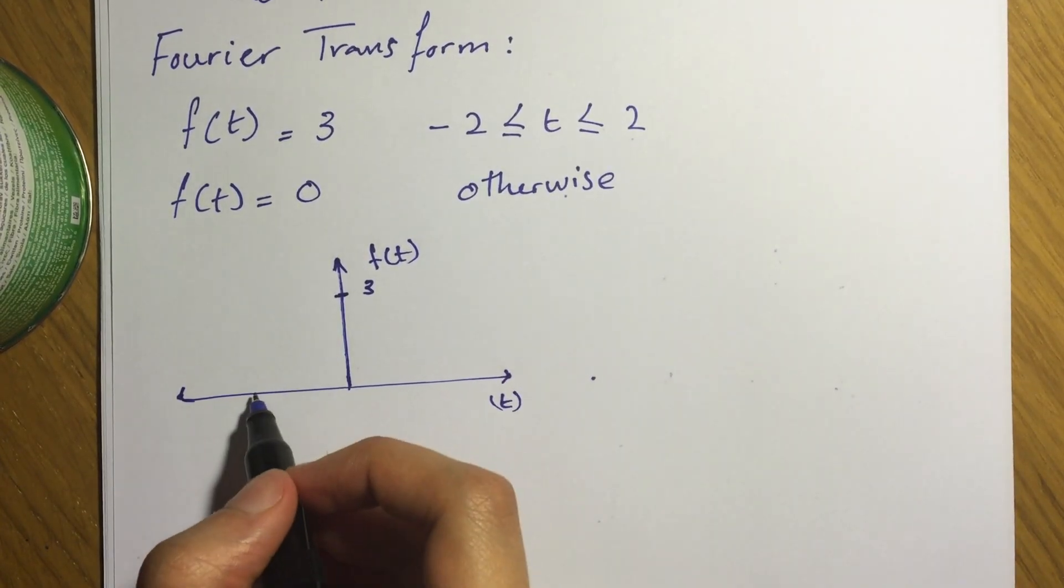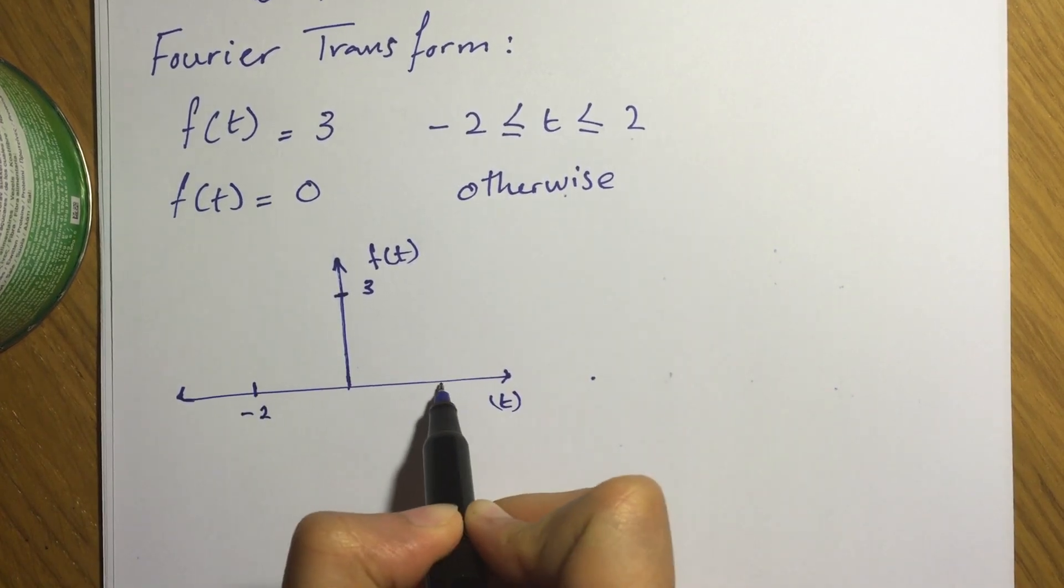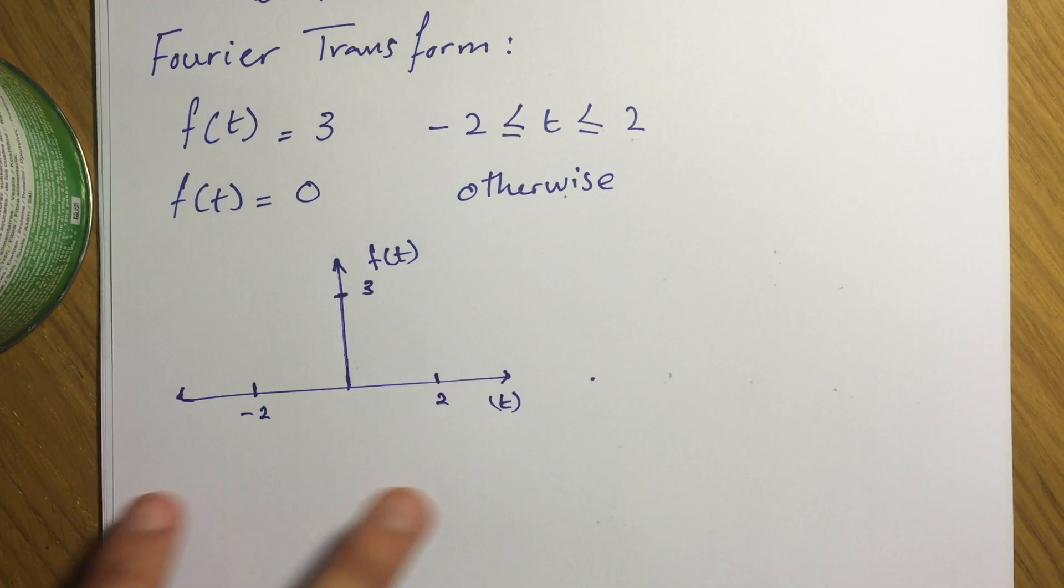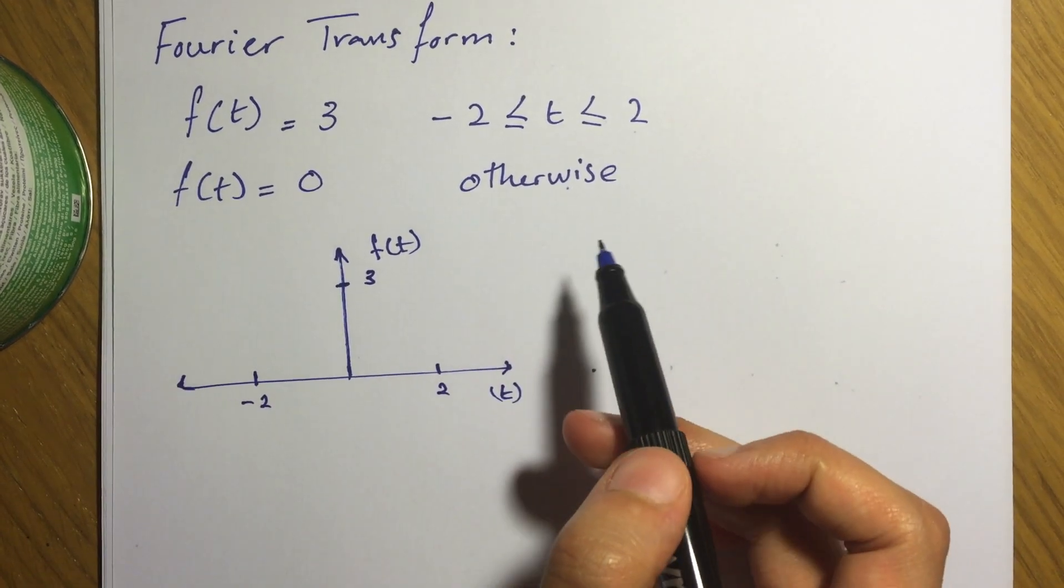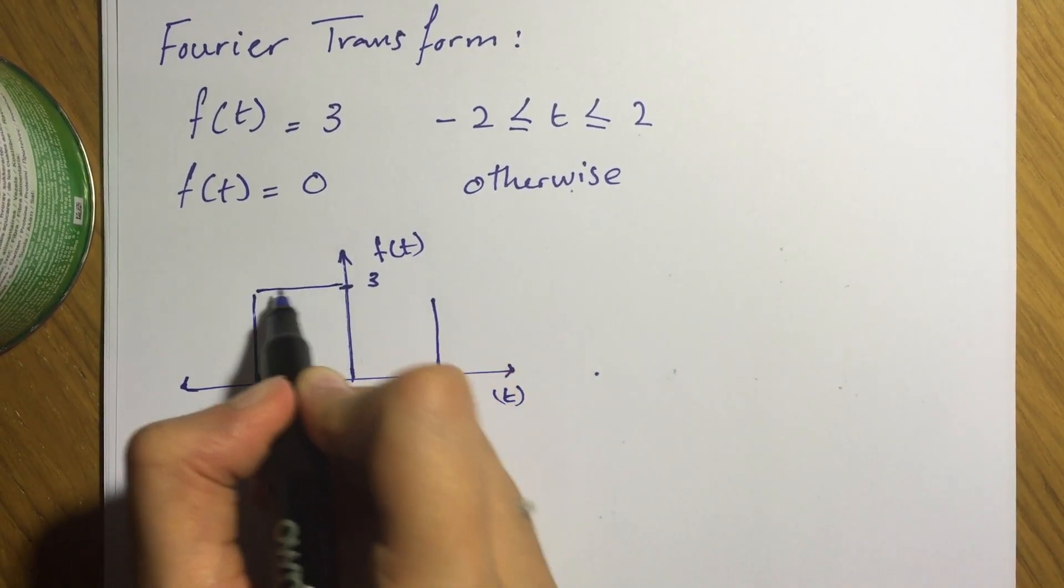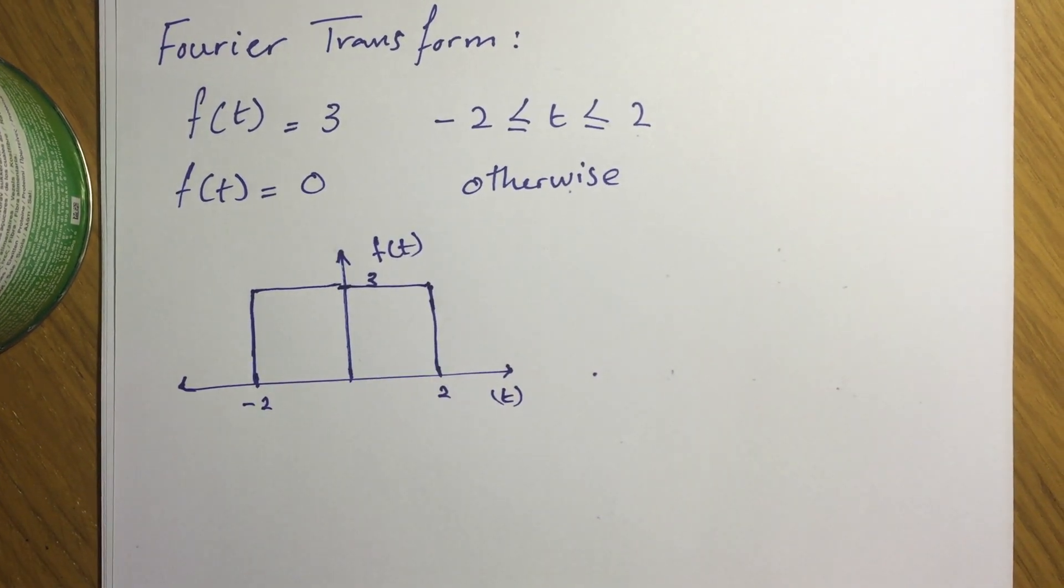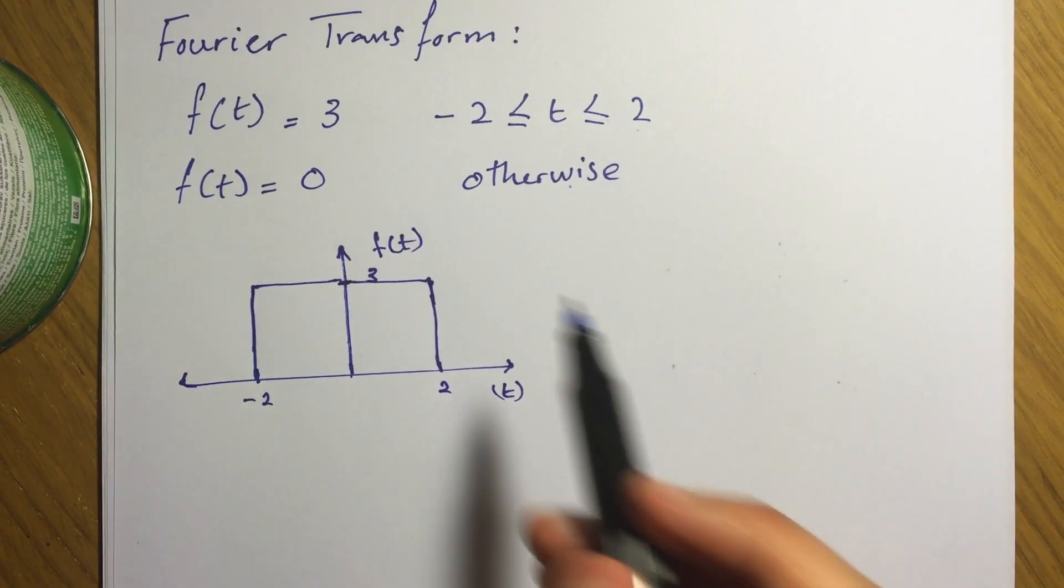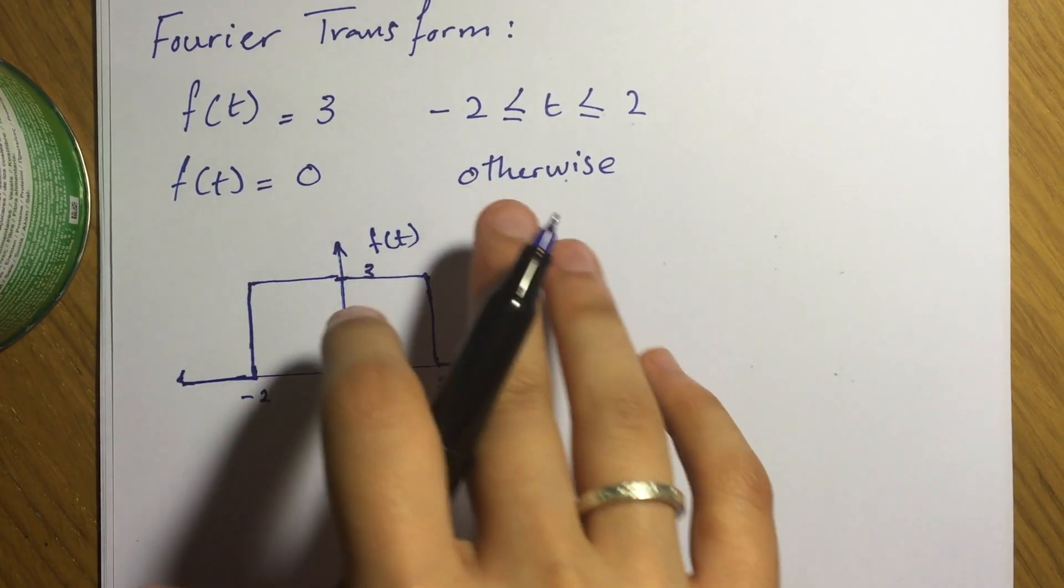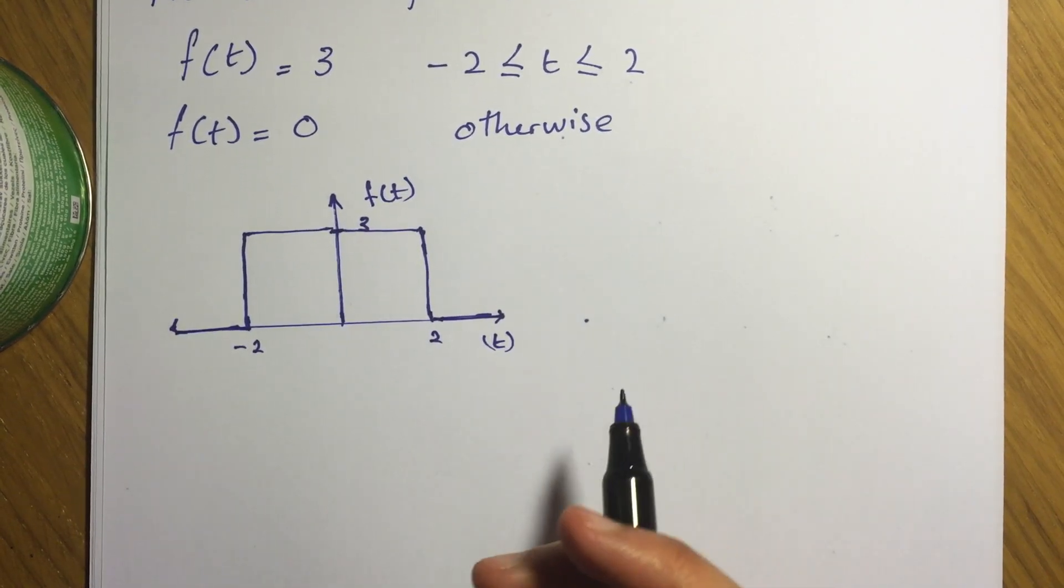Put the limit, so negative 2 and 2, because here we're talking about time. And as I said before, the x-axis is the time. Just connect them, and it says otherwise, so other times it's zero. So this is all zero here. So this is the sketch for the question.